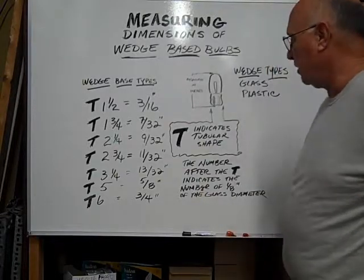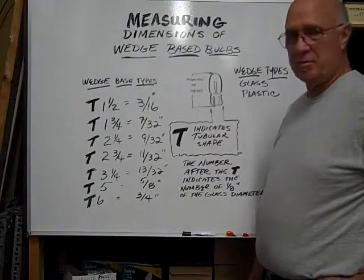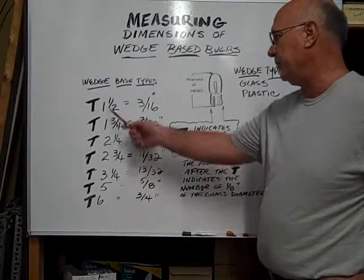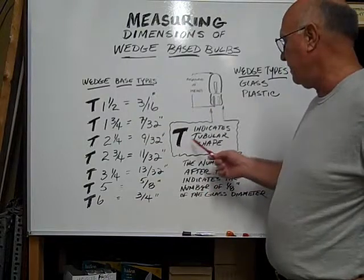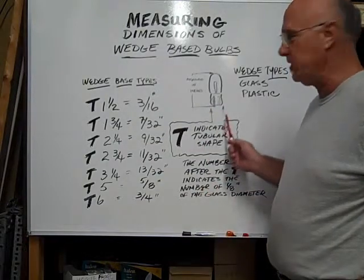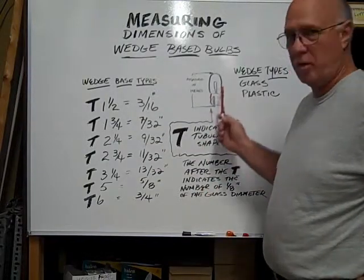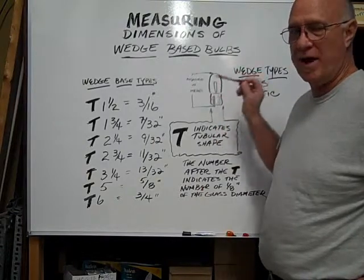Glass wedge-based bulbs diameters are indicated by a T number. You see the different sizes here. The T determines that it is a tubular shaped bulb, flat on the sides and usually round on the top.